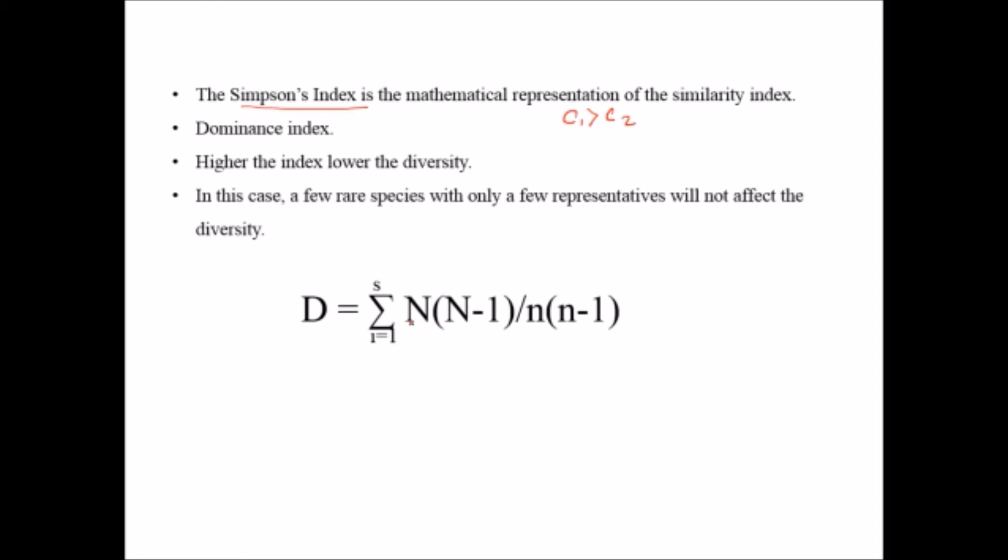Using this formula D equals summation of N capital N, which stands for the number of individuals in a single species, and here the small n represents the total number of species in a community. I will show you an example then it will be clear to you.